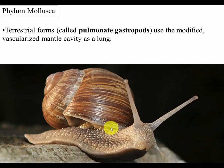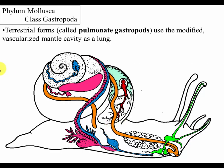Rather than just being an open cavity housing gills, the entire inside of the mantle cavity has become vascularized — it contains blood vessels — and it's just like your lungs. The blood vessels close to the surface are able to exchange gas with the outside air. The mantle cavity has blood vessels running all through it capable of passing gas back and forth with the air inside that cavity.